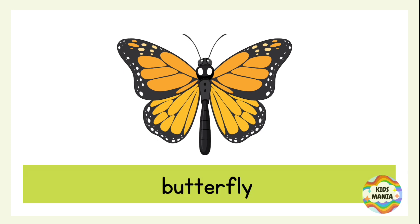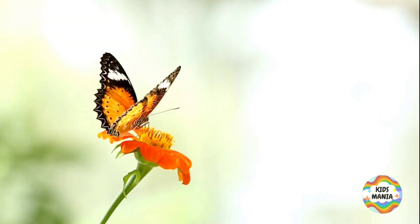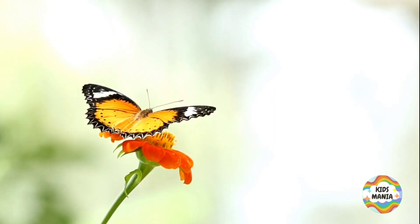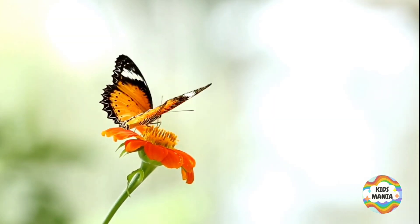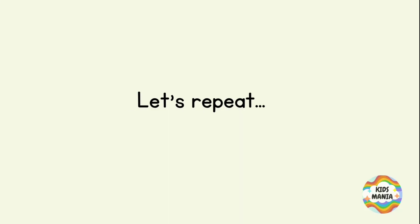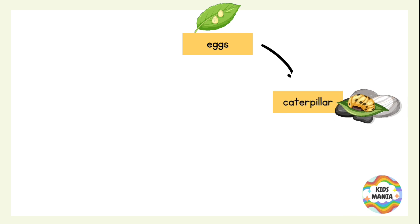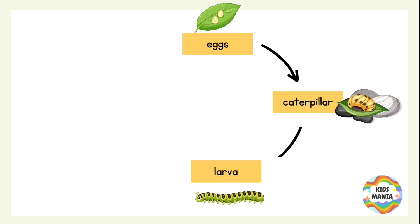This is a beautiful butterfly that started from an egg and changed into a beautiful butterfly. Now let's repeat this cycle: the egg grew into a caterpillar. The caterpillar is also called a young larva.